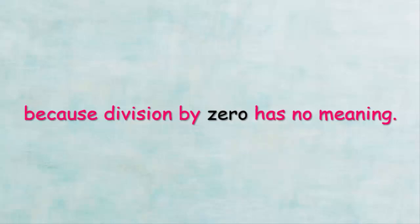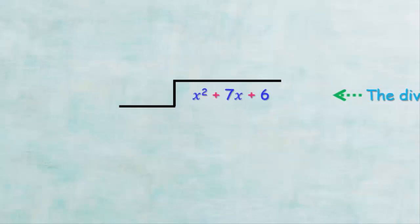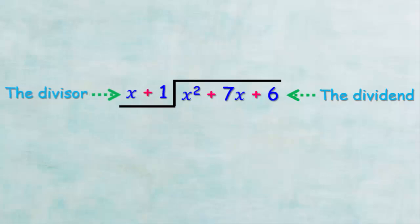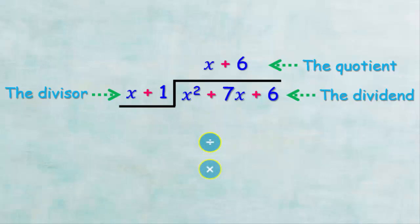First, we must draw the long division sign like this. We place the larger expression inside, which is called the dividend, and we place the smaller expression outside, which is called the divisor. We place the result on top, which is called the quotient. Then we follow, in order, these three operations: division, multiplication, and subtraction, and we repeat these steps until we get zeros.